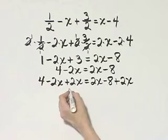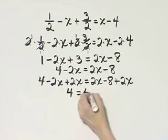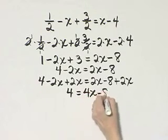The left side, the 2x's subtract out, and I have 4 is equal to, here I'll have like terms, 4x minus 8.